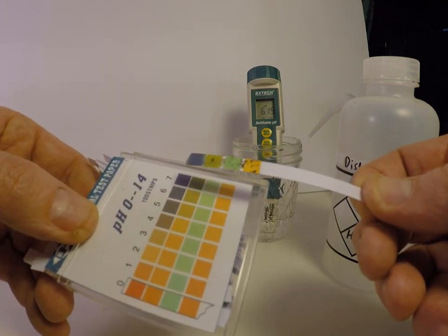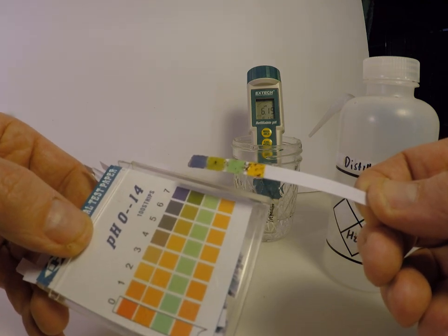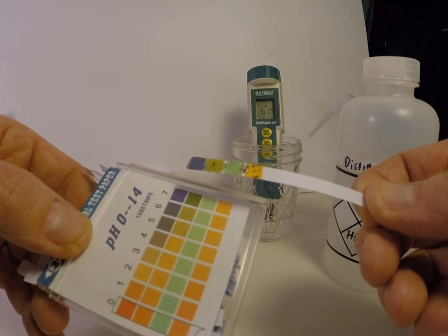we can see that it is reading about 1.5 to 0.9 pH unit lower than the meter. This seems to be generally true of pH indicator strips that they read lower than pH meters.